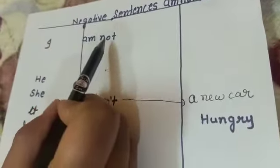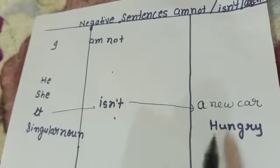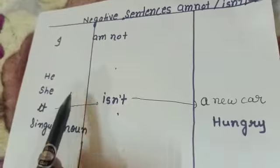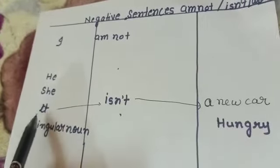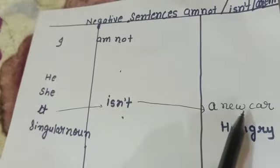I am not hungry. He isn't hungry. She isn't hungry. For it, we will write it is not a new car.